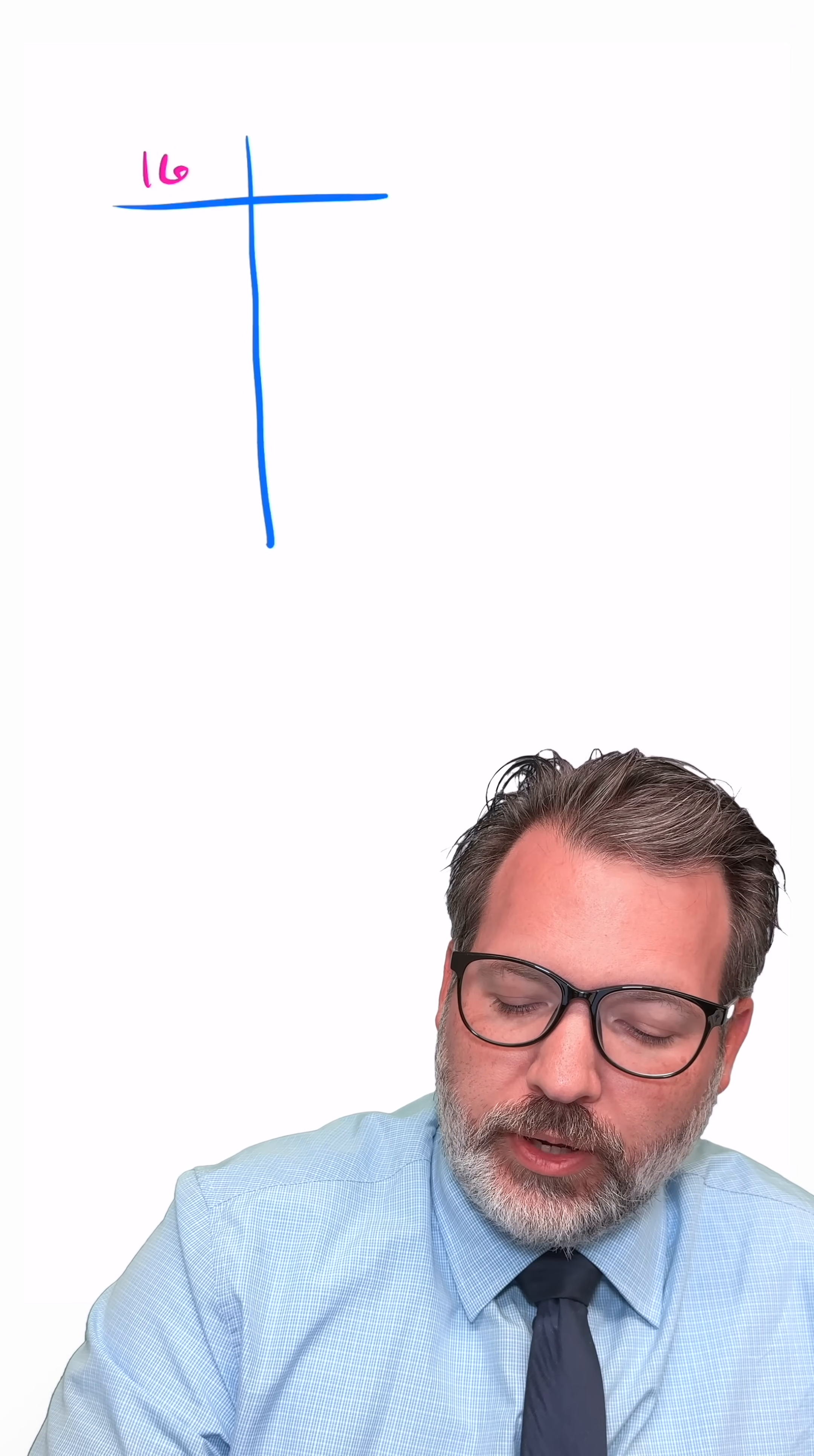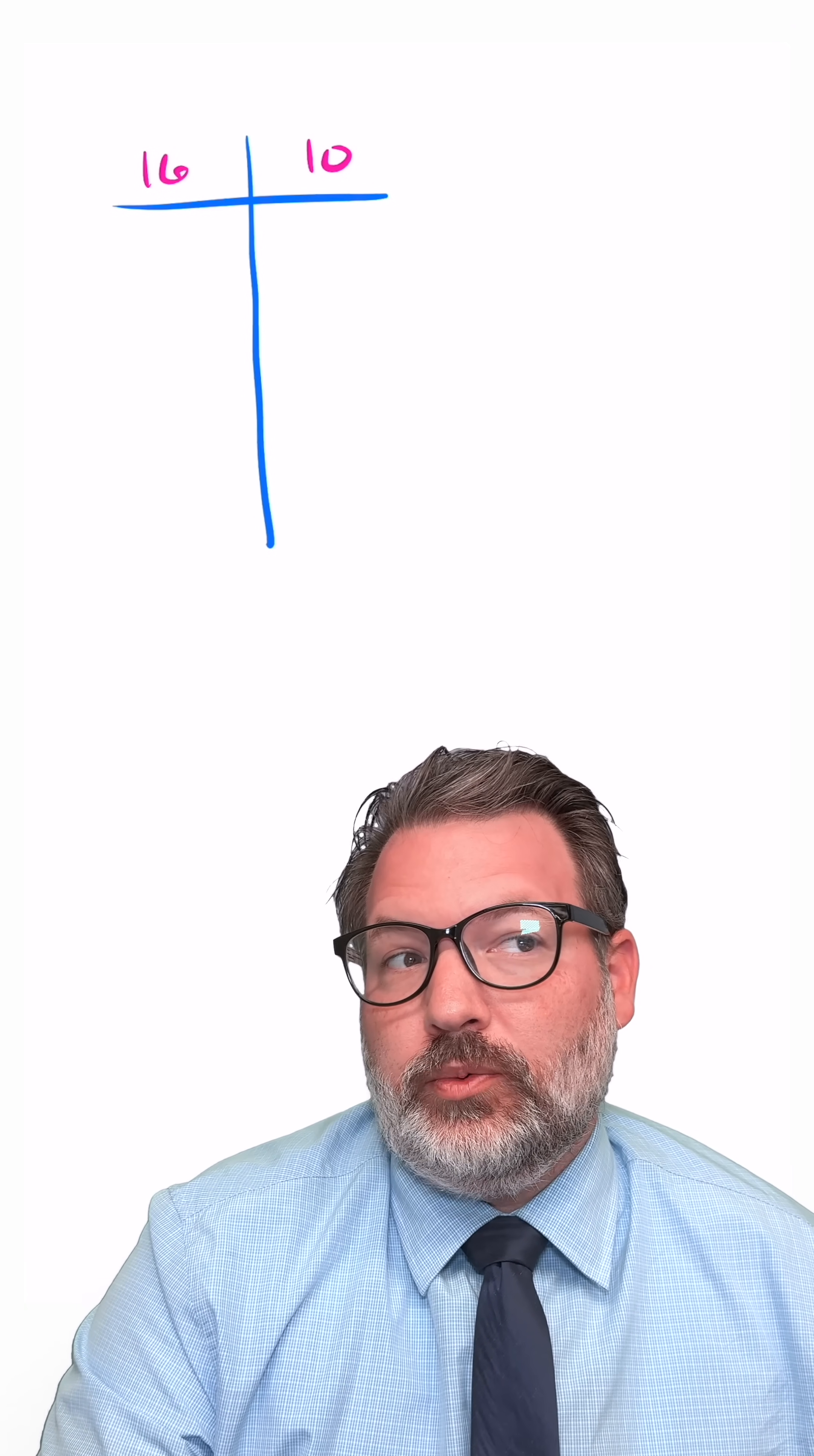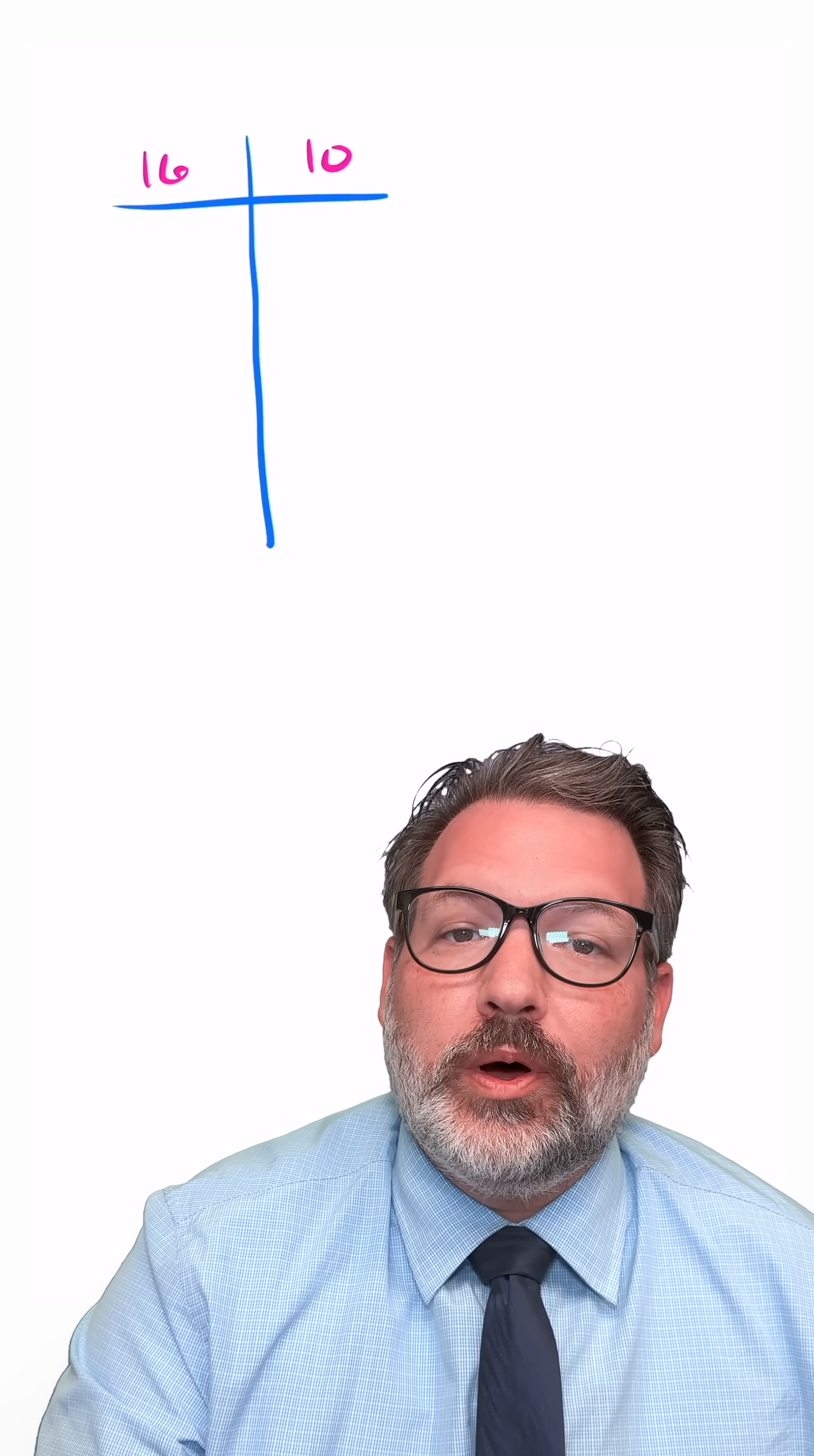This particular type of multiplication actually has a special name. It is called the Russian peasant method for multiplication, no offense intended to Russian peasants out there. Let's consider an example real quick like 16 times 10 which I'm guessing you already know is 160.